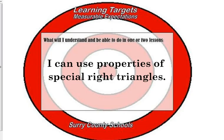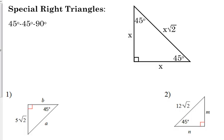What we're going to focus on are two types of special right triangles. First of all, we're going to look at what we call 45-45-90 triangles, where it's a right triangle and the two base angles are 45 degrees. This is an isosceles triangle, so two of their legs are the same. The legs are considered X, they have the same length, and the hypotenuse is always going to be that leg times the square root of 2.